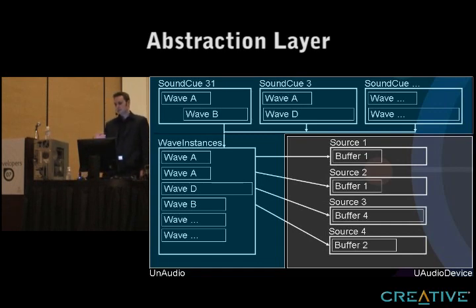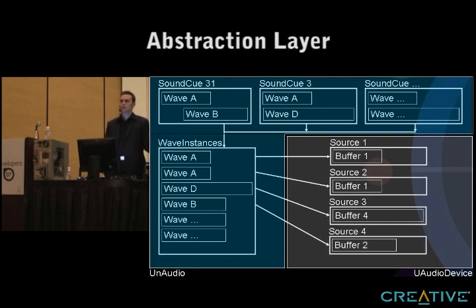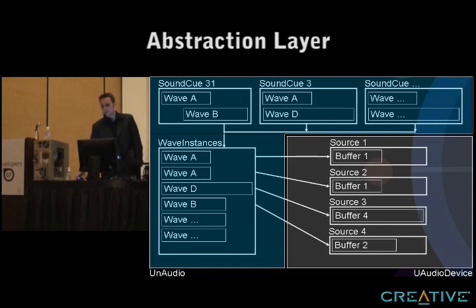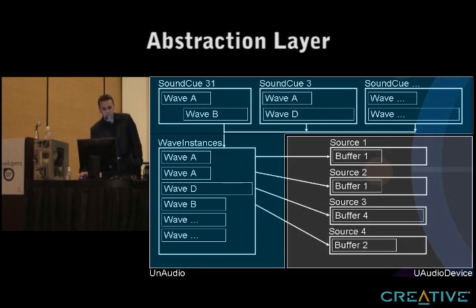You can use the same wave multiple times in a sound, so we need to actually play it per instance — because one, you could be looping; one, you could be routing through an oscillator; or actually start playing later. So in the abstraction layer, the sound cue is everything. The waves are the unique waves used by the sound cue, and the wave instances is each individual instance that is being played.